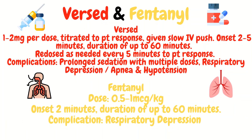Then there's Versed and fentanyl. For Versed, typical dosing is 1 to 2 milligrams titrated to patient response and given very slowly — onset is within 5 minutes with a duration up to 60 minutes. When you give the first dose, give it time to work before giving more, because stacking doses will hit the patient all at once and they'll go apneic. Complications include respiratory depression, apnea, and hypotension. For fentanyl, typical dosing is 0.5 to 1 microgram per kilogram, with onset within 2 minutes and duration up to 60 minutes. Complications also include respiratory depression, and as always, meds should be given slowly, allowing time to take effect before giving more.